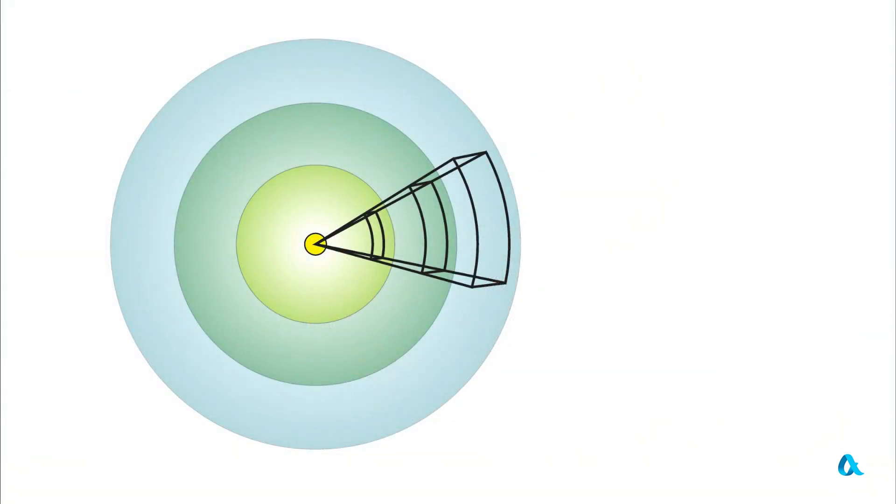Let's consider a source from which light spreads uniformly in all directions. Through any spherical surface with the center at this source, the same amount of light energy will pass per unit time interval, but the surface area of a sphere grows proportionally to the square of its radius.